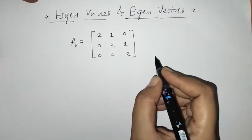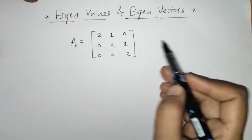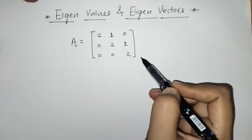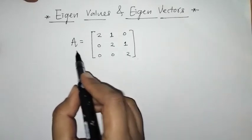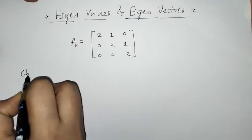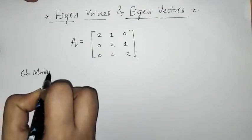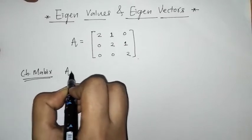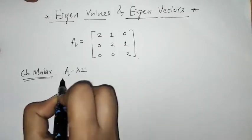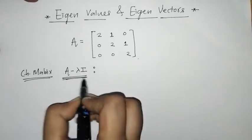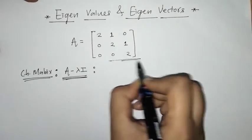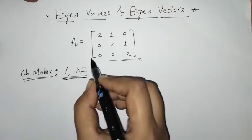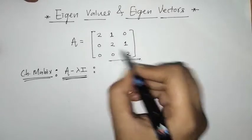Hello everyone, welcome to Unlock Maths. Today we have to find eigenvalues and eigenvectors for this given matrix A. First we have to find the characteristic matrix, which is given by A minus lambda I, where A is the given matrix, lambda is a scalar, and I is the identity matrix of the same order as matrix A.